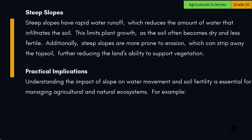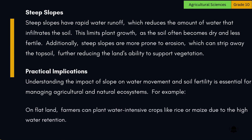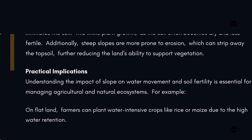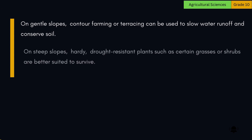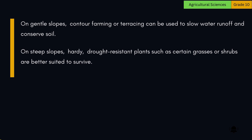Understanding the impact of slope on water movement and soil fertility is essential for managing agricultural and natural ecosystems. For example, on flat land, farmers can plant water-intensive crops like rice or maize due to high water retention. On gentle slopes, contour farming or terracing can be used to slow water runoff and conserve soil. On steep slopes, hardy, drought-resistant plants such as certain grasses or shrubs are better suited to survive.